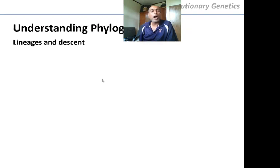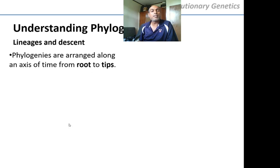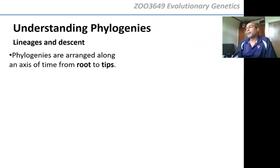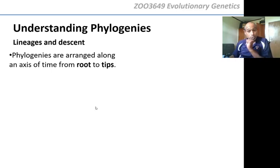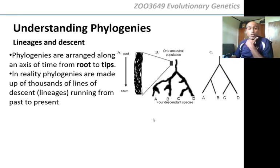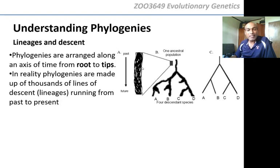So how do we understand phylogenies? How do we understand how phylogenies are arranged? Phylogenies are arranged along an axis from the root to the tip. In reality, phylogenies are made up — as you've seen from the previous slide — of thousands of lines of descent, these little lines here. Thousands of them.